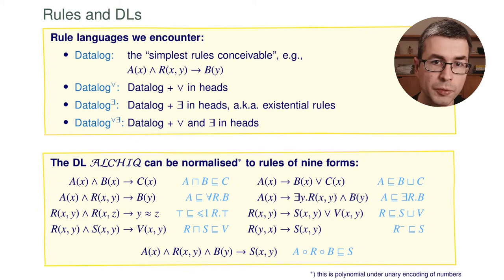We will in particular look at the description logic ALCHIC which can be normalized into these nine forms of rules that require equality here to express the number restrictions and disjunctions to express the non-determinism of ALC and also feature inverses as you can see in this last rule here. If you have Horn-ALCHIC you simply omit the disjunctions in those rules and the rest is as before.